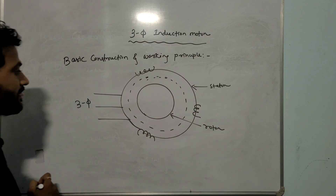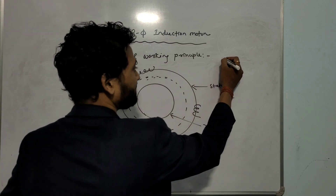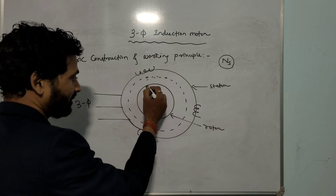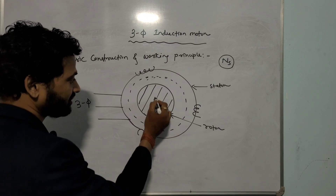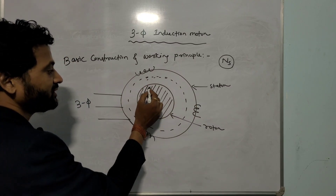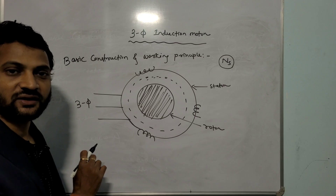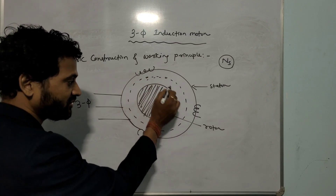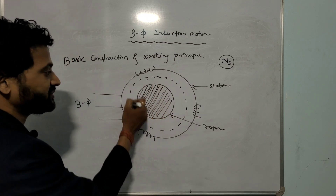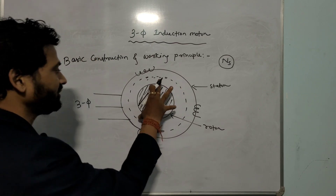That magnetic field will circulate in the air gap — the gap between stator and rotor. The speed at which it circulates is called synchronous speed, denoted Ns. Synchronous speed is the speed of the revolving magnetic field. The rotor has a bunch of conductors — rotor winding or rotor bars. Since the magnetic flux is revolving, flux is cut by these conductors. According to Faraday's law of electromagnetic induction, the rate of change of flux induces an EMF, so an EMF will be induced in the rotor conductors.